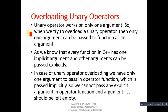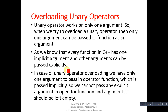A unary operator works on only one argument. When we try to overload a unary operator, only one argument can be passed to a function. In C++, every function has one implicit argument and other arguments can be passed explicitly. In case of unary operator overloading, we have only one argument to pass to the operator function, which is passed implicitly.